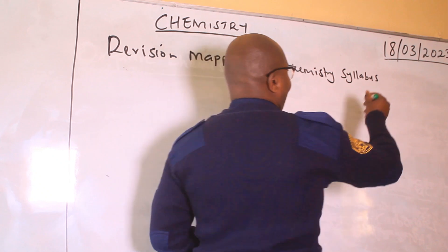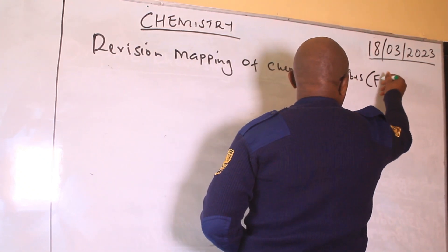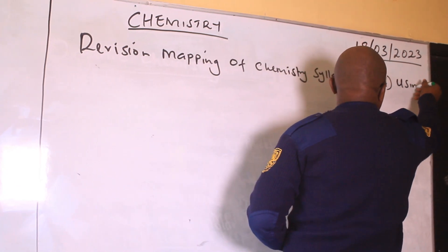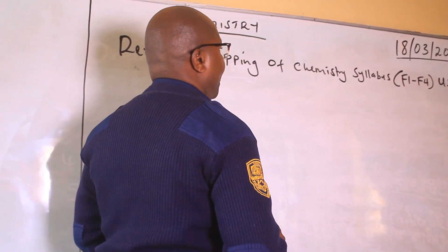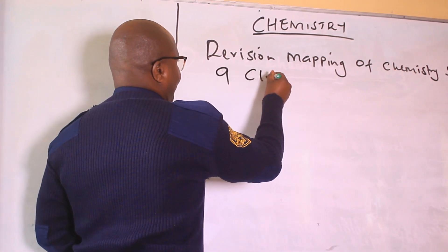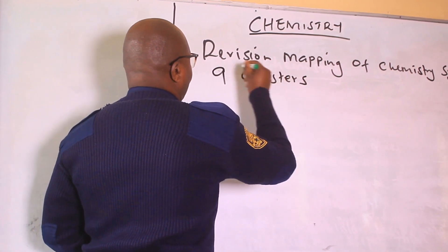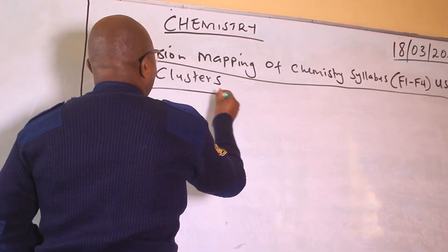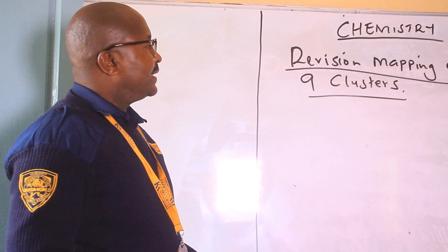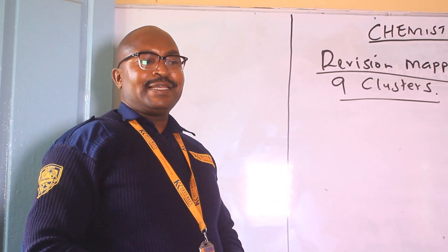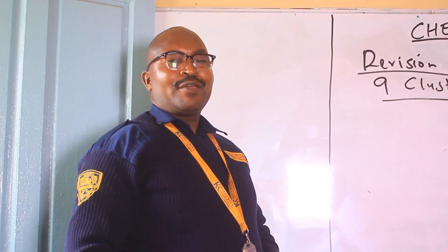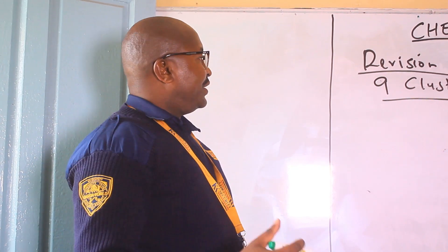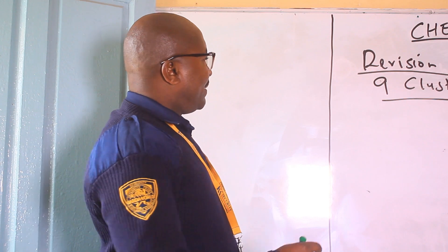That is from Form 1 to Form 4 using 9 clusters. I am going to list these 9 clusters and then from there we are going to embark on going through each cluster. So number 1, the first cluster is arithmetic work in chemistry.